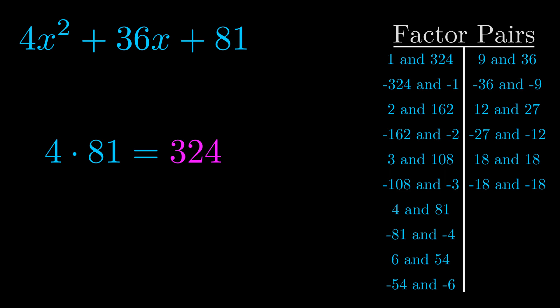The b value is the coefficient on the x term. That's the middle term, the one that we haven't done anything with yet. And really this is the only factor pair that we need.